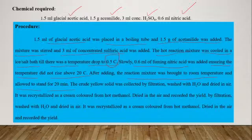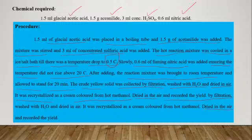The crude yellow solid was collected by filtration, then it was washed with water and dried in air. After that, recrystallization was also done by using hot methanol, dried in air, and recorded the yield of the product and also calculate the melting point of the product.